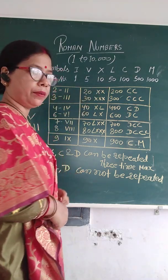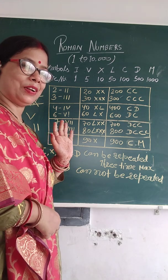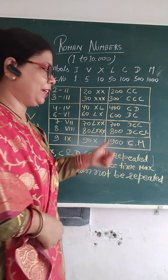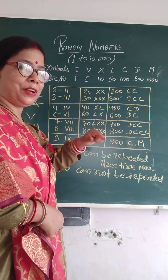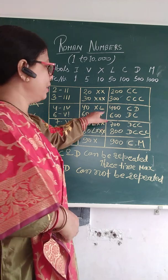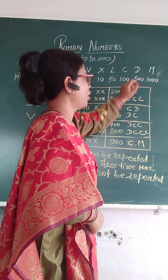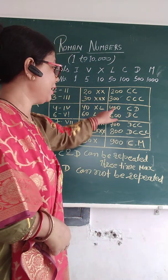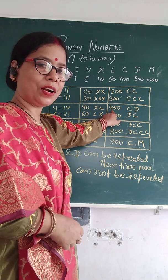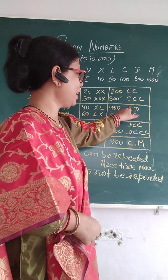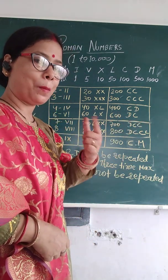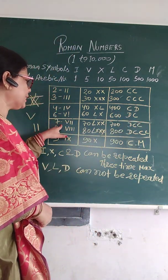L for 50. 50 minus 10 is 40 — X pichhe laga, XL. 50 plus 10 is 60, so LX. C for 100 and D for 500. For 400: 500 minus 100, so C before D gives CD. And DC means 500 plus 100, which is 600.